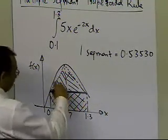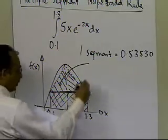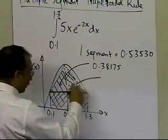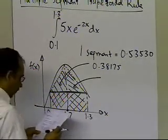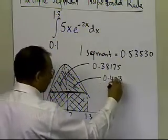But when I have two segments, the area of this trapezoid here turns out to be 0.38175, the area of this trapezoid, the second trapezoid, turns out to be 0.40377.